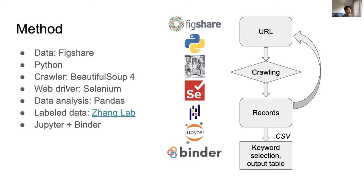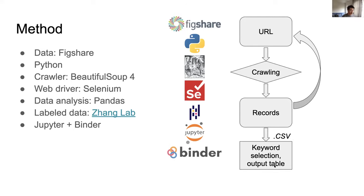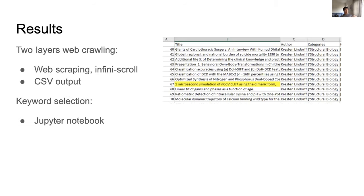The methods we are using include a modern Python-to-Jupyter Notebook pipeline to make it reproducible and runnable by users themselves. For web crawling we used Beautiful Soup and a web driver to automate the next-page function. For data analysis and keyword selection we used pandas, and we also have some available data of what COVID-19-related proteins should look like. From the crawling function we generate CSV files, and then use a Jupyter Notebook to do keyword selection. We managed to get a CSV file with records of COVID-19-related project simulation files including title, author, category, and some keywords from the websites.